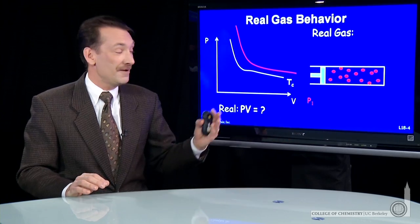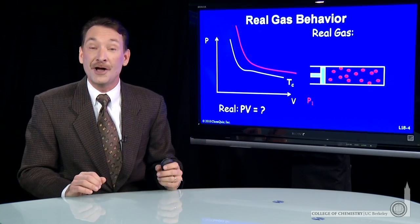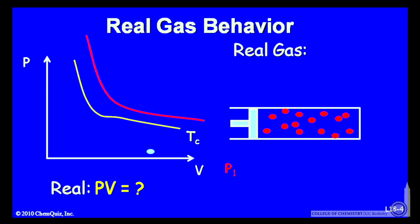So what is real gas behavior? Let's look at a temperature, an isotherm, significantly below the critical temperature. Here we'll start at a pressure and volume, and we'll decrease the volume, and we'll get an increase in the pressure of the gas.